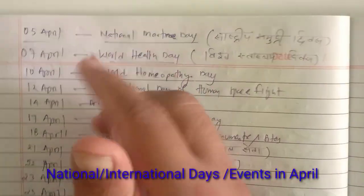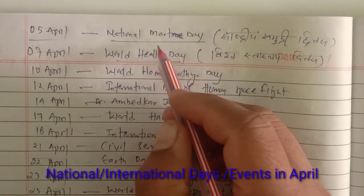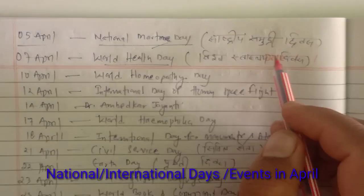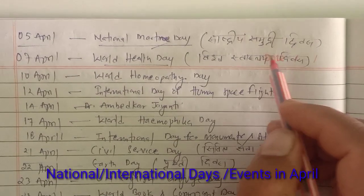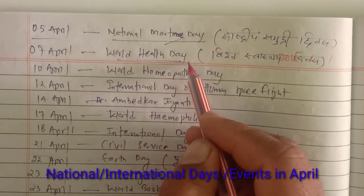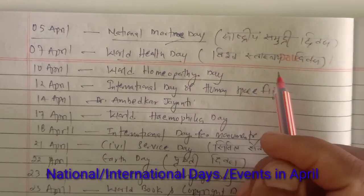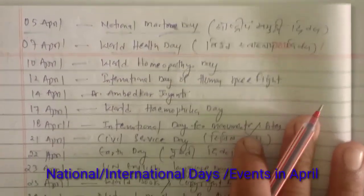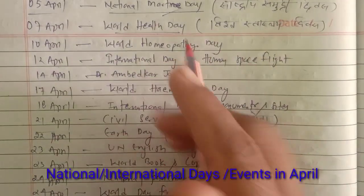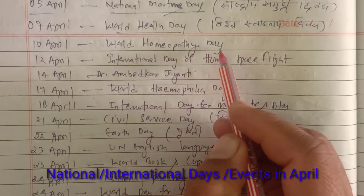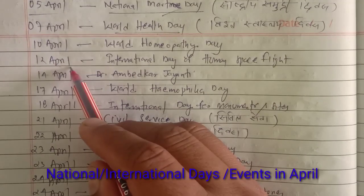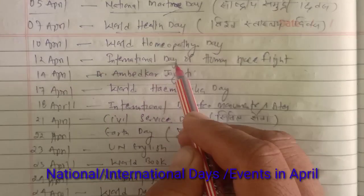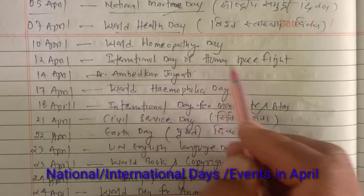On 5th April it is National Maritime Day, known as Rastriya Samudri Divas. 7th April is World Health Day, or Vishwa Swastra Divas. On 10th April it is World Homeopathy Day. And 12th April is International Day of Human Space Flight.